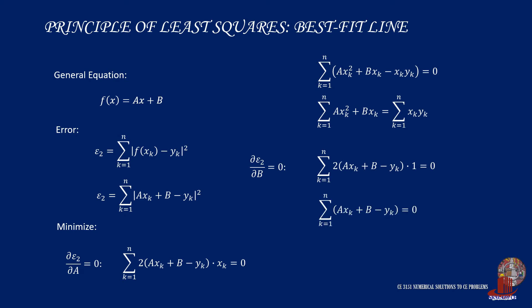Simplify the equation by disregarding 1, and transpose the term as well to have a times x sub k plus b, taking the summation, is equal to the summation of y sub k.